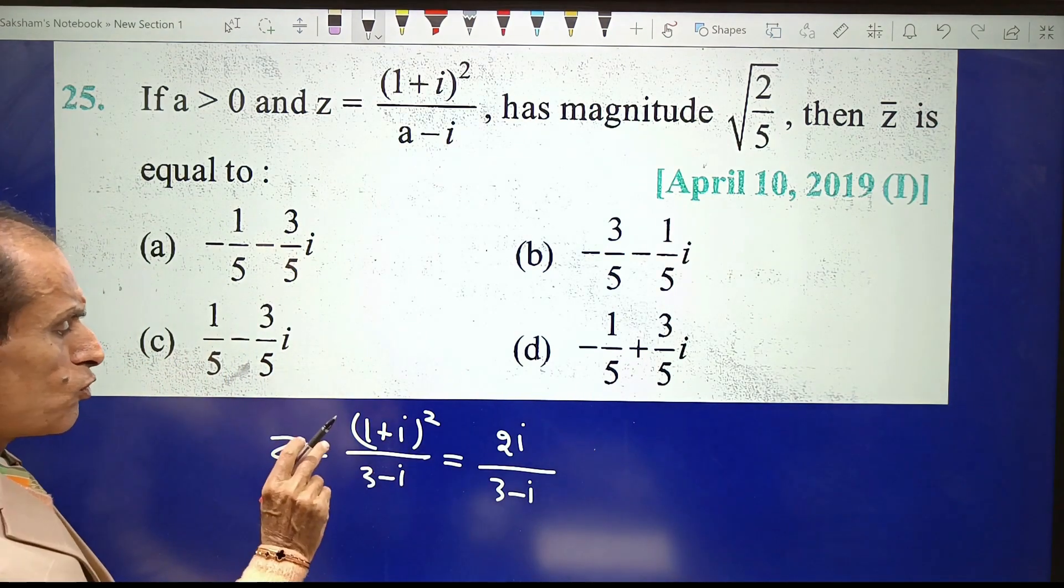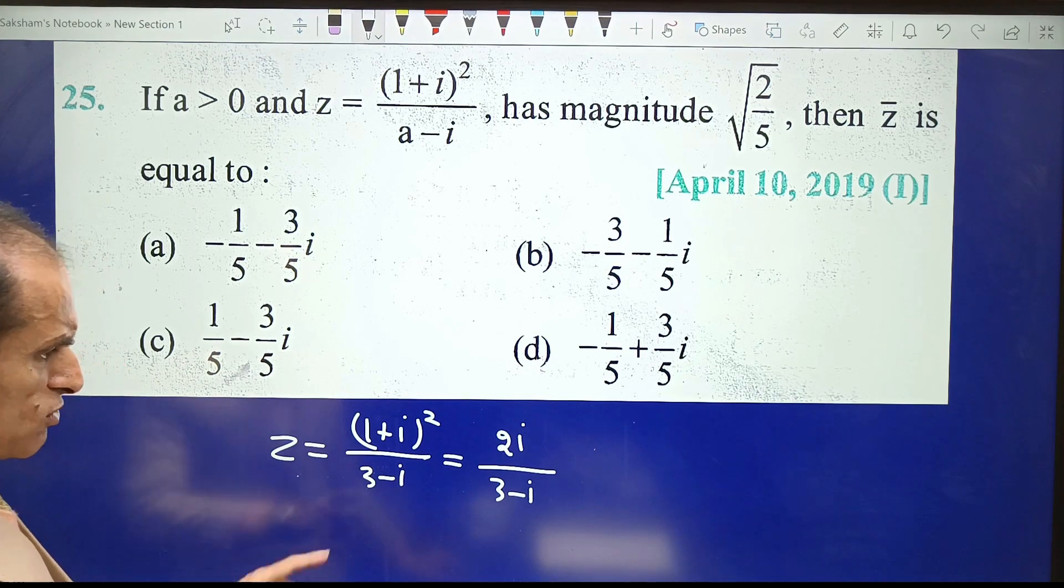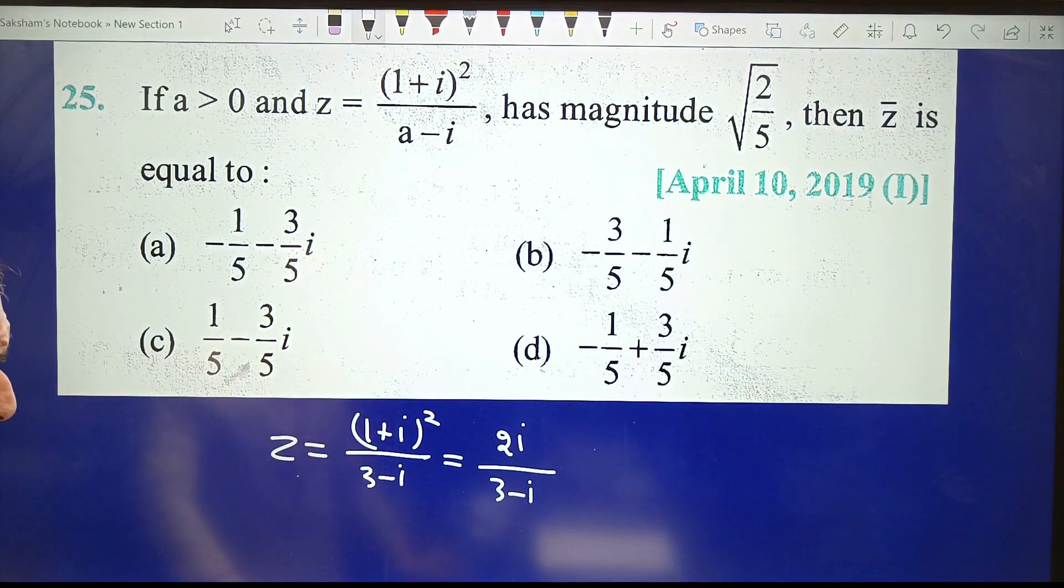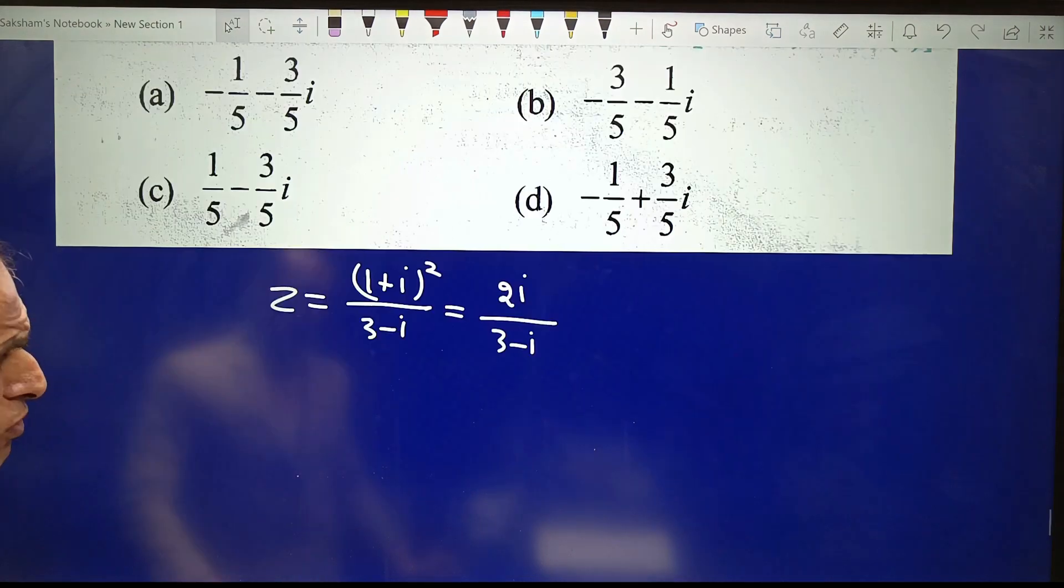You must know directly that (1+i)² = 2i. It is not difficult, but keep it in mind as it is a useful thing.